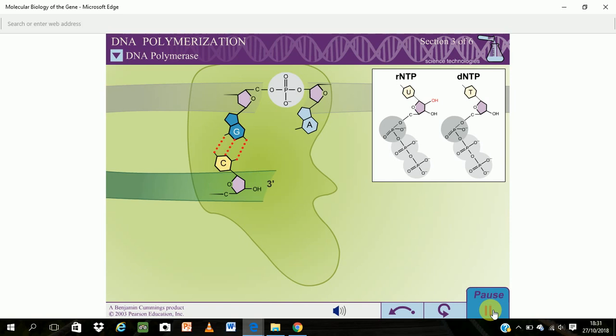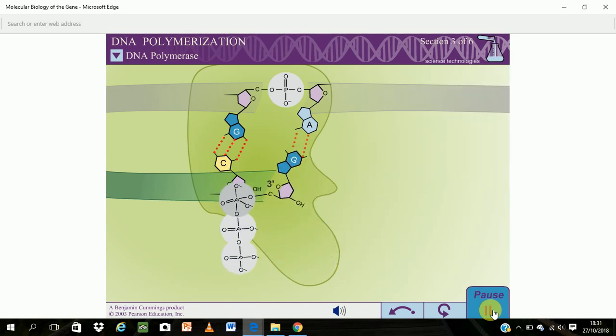Correct base pairing is also required for catalysis. If an incorrect base pair forms, the alpha-phosphoryl group of the DNTP cannot properly align with the 3' hydroxyl of the primer strand. Once the proper DNTP is bound in the pocket, the reaction can continue.